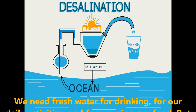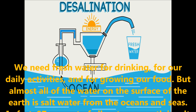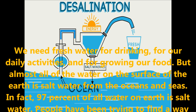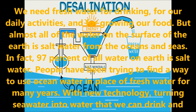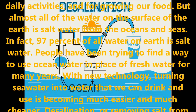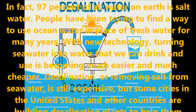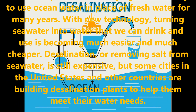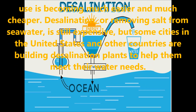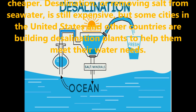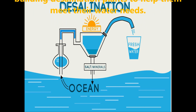Desalination — we need fresh water for drinking, our daily activities, and growing our food. But almost all of the water on the surface of the earth is salt water from the oceans and seas. In fact, 97% of all the water on earth is salty. People have been trying to find a way to use ocean water in place of fresh water for many years. With new technology, turning sea water into fresh water that we can drink has become much easier and cheaper. Desalination, or removing salt from water, is still expensive, but some cities in the United States and other countries are building desalination plants to meet their water needs.